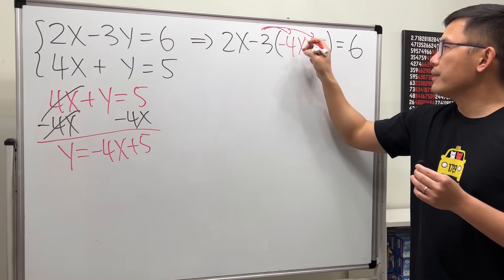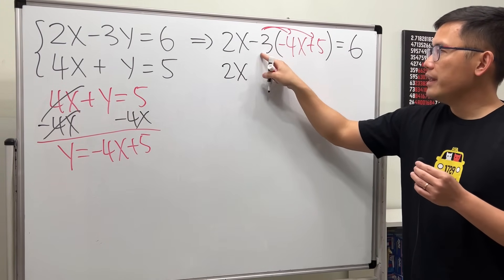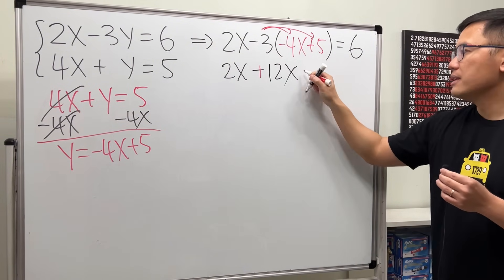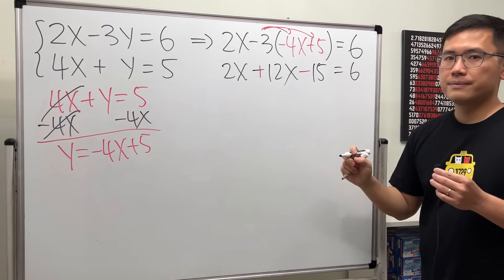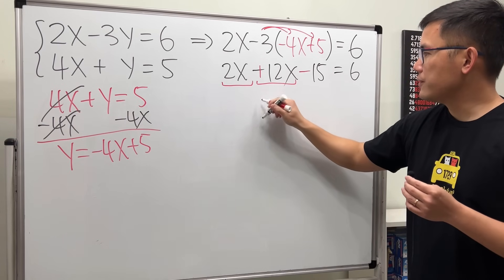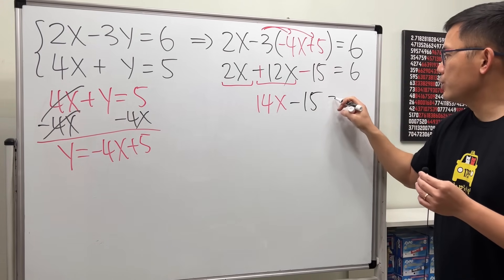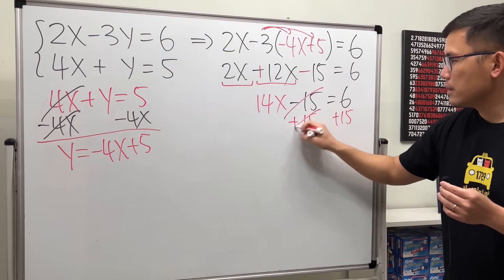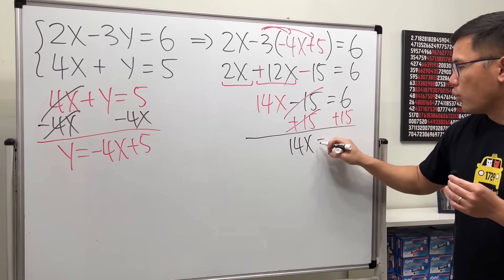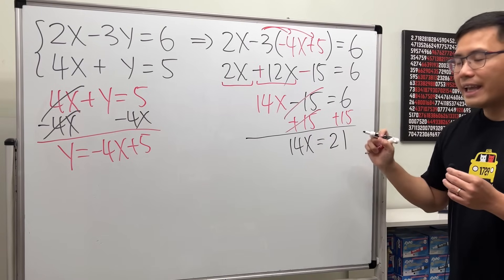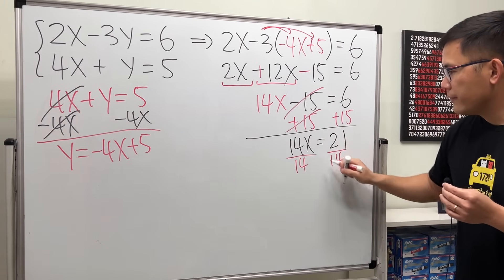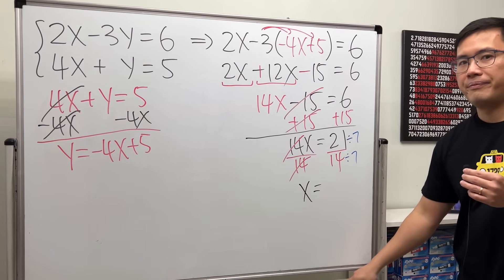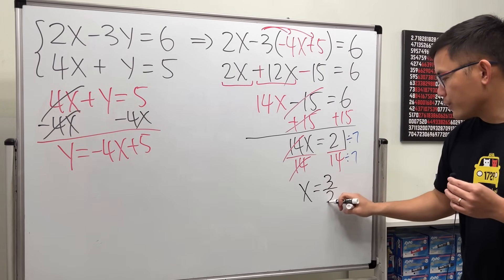Let's first distribute the negative 3. So this is 2x. Negative 3 times negative 4x is positive 12x, and then negative 3 times positive 5 is negative 15. And now it's equal to 6. Then we see 2x plus 12x is 14x, and then minus 15 is equal to 6. We can just add 15 on both sides, and we get 14x equals 21. Then divide both sides by 14. We can reduce by 7: 21 divided by 7, 14 divided by 7 — we get 3 over 2, which is the same as 1.5.